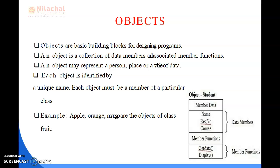The only necessary thing is the type of message accepted and the type of response returned by the object. Without objects, we cannot be able to do anything in Java because it is the most important concept. That's why its name is Object Oriented Programming — objects are responsible for all types of execution. Objects are the central idea behind OOP; they have specific characteristics and behaviors, where data represents the state and behavior represents the functionality of an object.